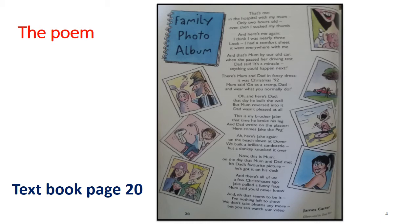Fifth stanza: 'And here's dad. That day he built the wall, but mum reversed it into it. Dad wasn't pleased at all.' So their father built a wall but their mother reversed the car into it, and the father was not happy about it.